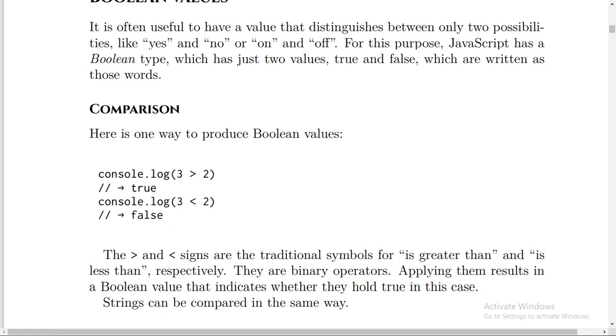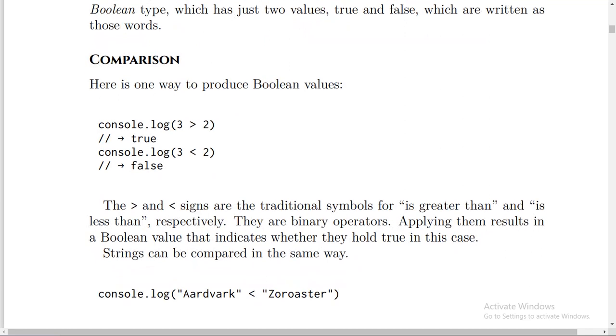The > and < signs are the traditional symbols for is greater than and is less than, respectively. They are binary operators. Applying them results in a Boolean value that indicates whether they hold true in this case.